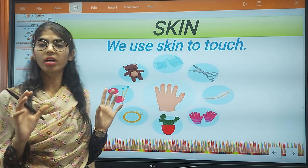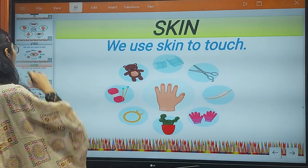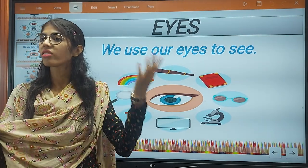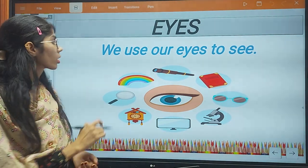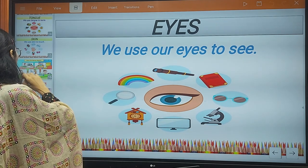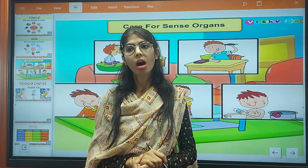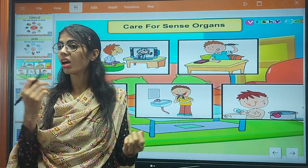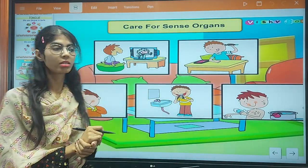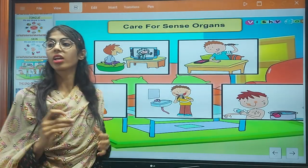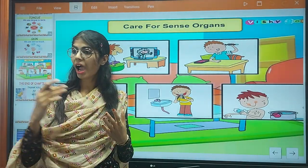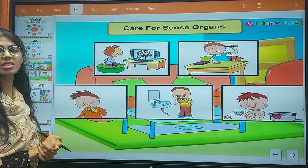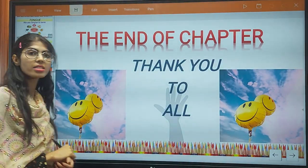With the help of our skin we can feel what is hot and what is cold. And the last sense organ is the eyes — with the help of our eyes we can see, we can look at the world. We should take care of our sense organs: we should clean our mouth, clean our nose, and wash our hands regularly. This is your EVS class. Thank you, class.